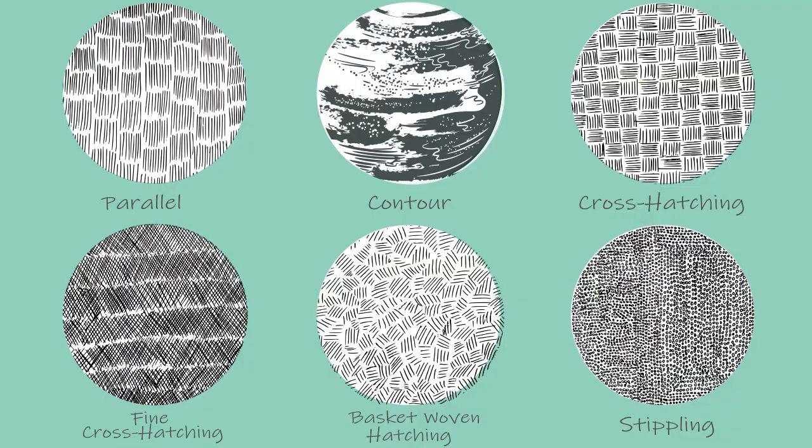The most common way to do this is with hatching. As artists, we usually use these six types of hatching: parallel hatching, contour hatching, cross hatching, fine cross hatching, basket hatching, and stippling. All of these are done by only using lines. For more details on these, please watch my video on shading and texture.